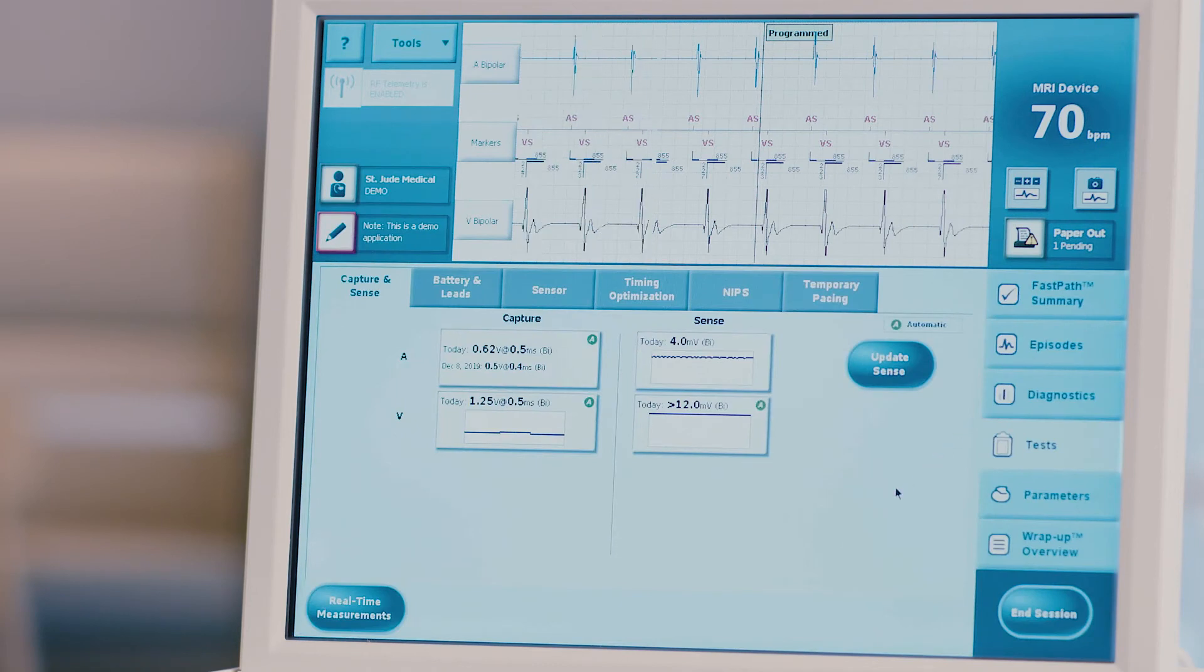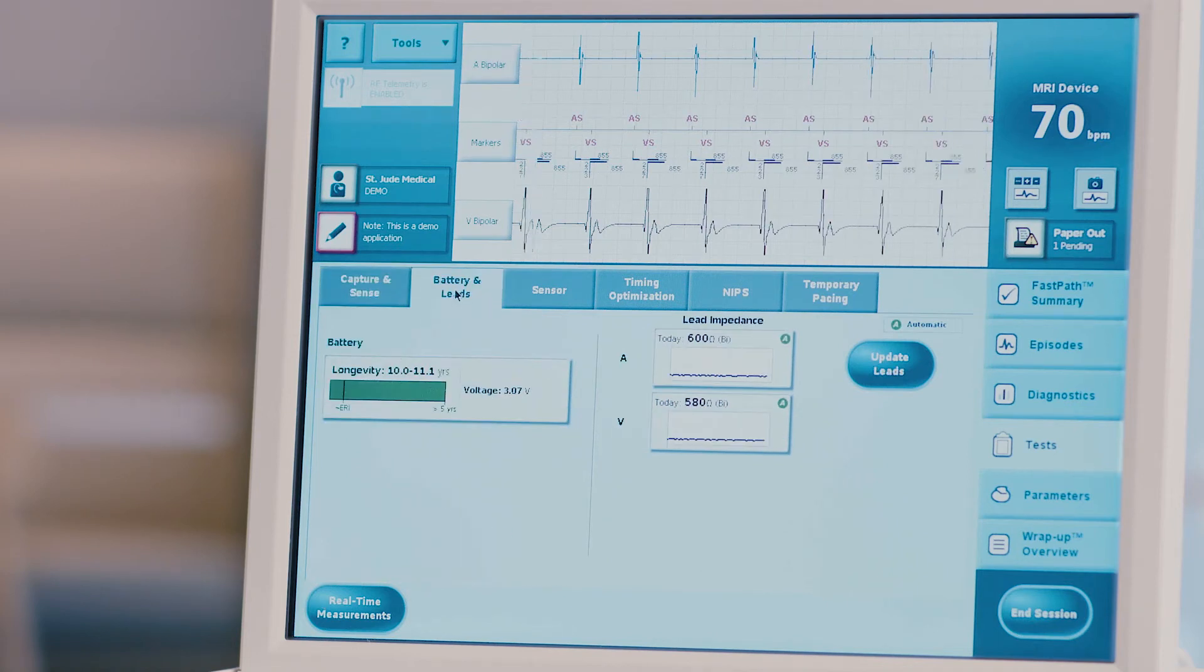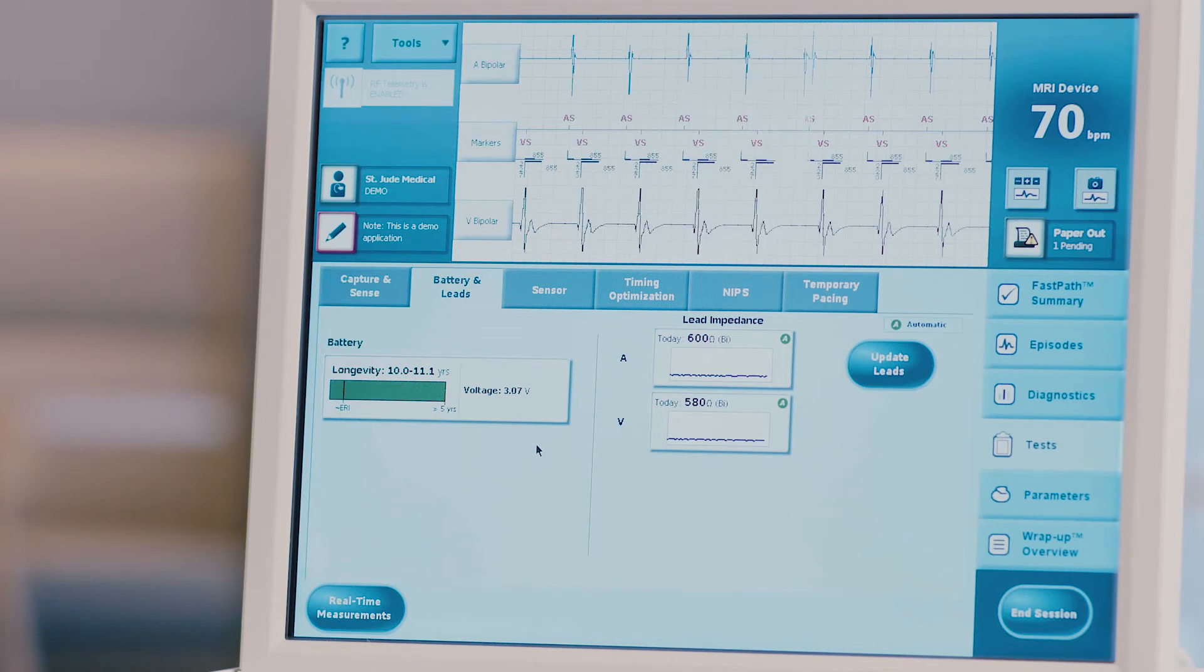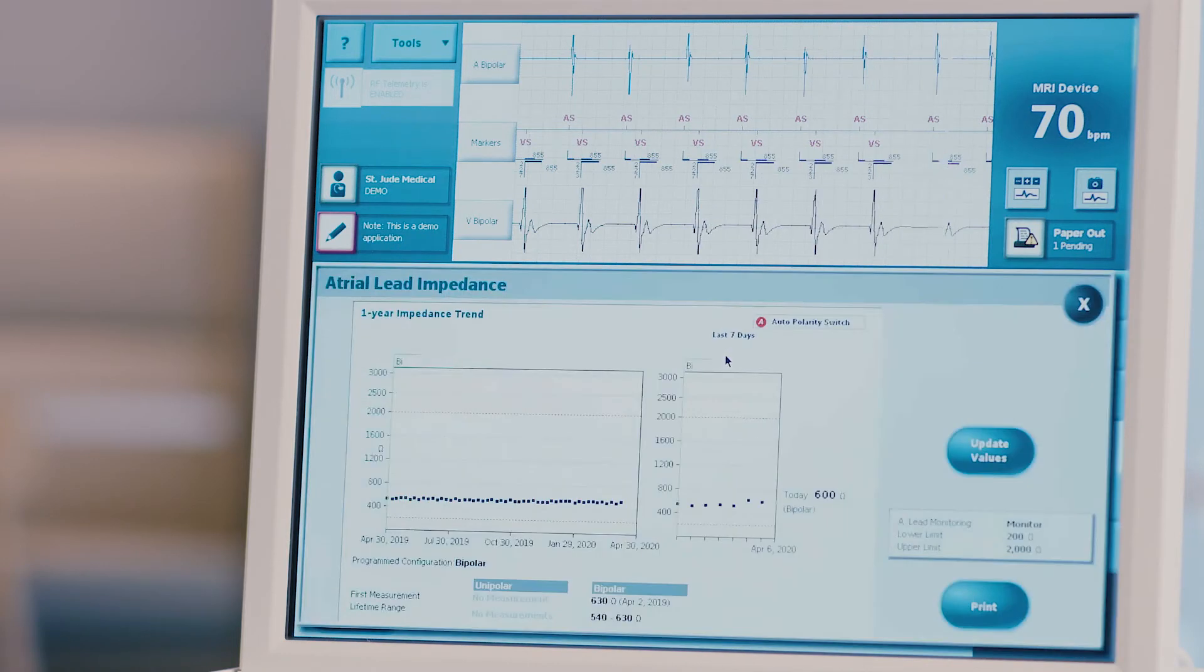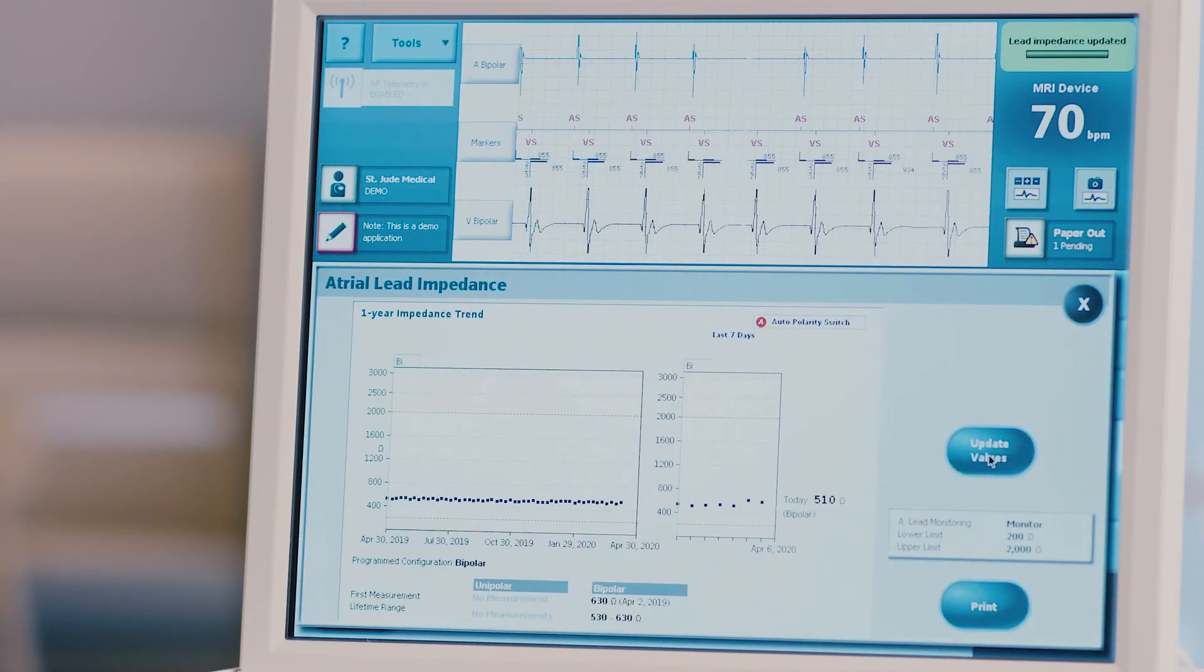Any measurements obtained during testing will be recorded. Repeat this process for any necessary testing that was not automatically performed upon interrogation. Press the battery and leads tab at the top of the screen to perform lead impedance testing if necessary. Choose the desired lead for testing and press the update lead button. This test will run automatically and the measurement will be displayed. Repeat for all necessary leads.